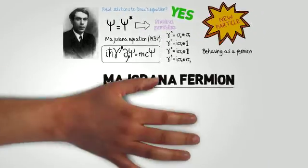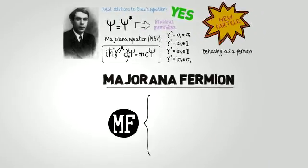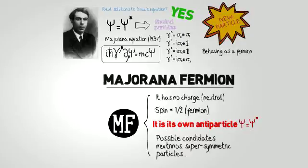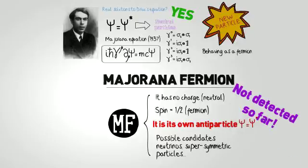Among its theoretical characteristics, we can observe that its charge is neutral, it has spin 1/2, it is its own antiparticle, meaning that it lives at the boundary between matter and antimatter, and there are several possible candidates to the Majorana particles. But the truth is that it hasn't been confirmed experimentally so far.